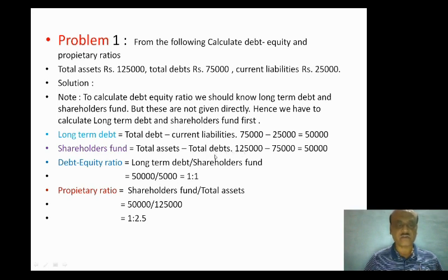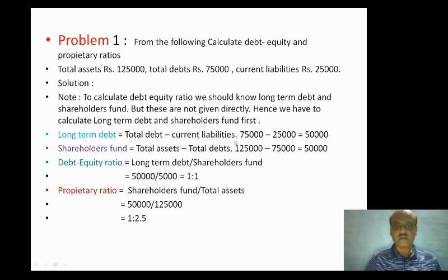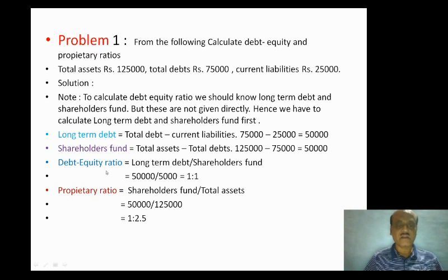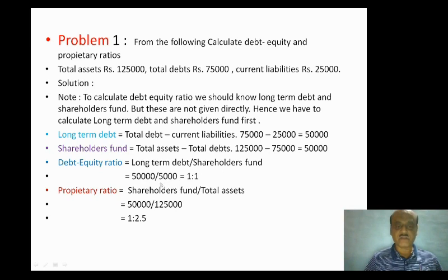Shareholders fund equals $1,25,000 minus total debt $75,000 minus current liabilities, giving us $50,000. Long-term debt equals total debt $75,000 minus current liabilities $25,000, giving $50,000. So the debt equity ratio formula is long-term debt divided by shareholders fund, that is $50,000 divided by $50,000, which equals 1 is to 1. So 1 is to 1 is the debt equity ratio.